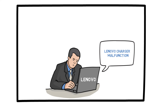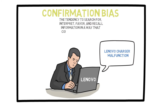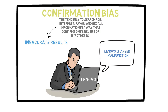This is an example of what we call the confirmation bias. Wikipedia's definition of the confirmation bias is the tendency to search for, interpret, favor, and recall information in a way that confirms one's beliefs or hypotheses. This can lead to inaccurate results because the results of your search are extremely biased.